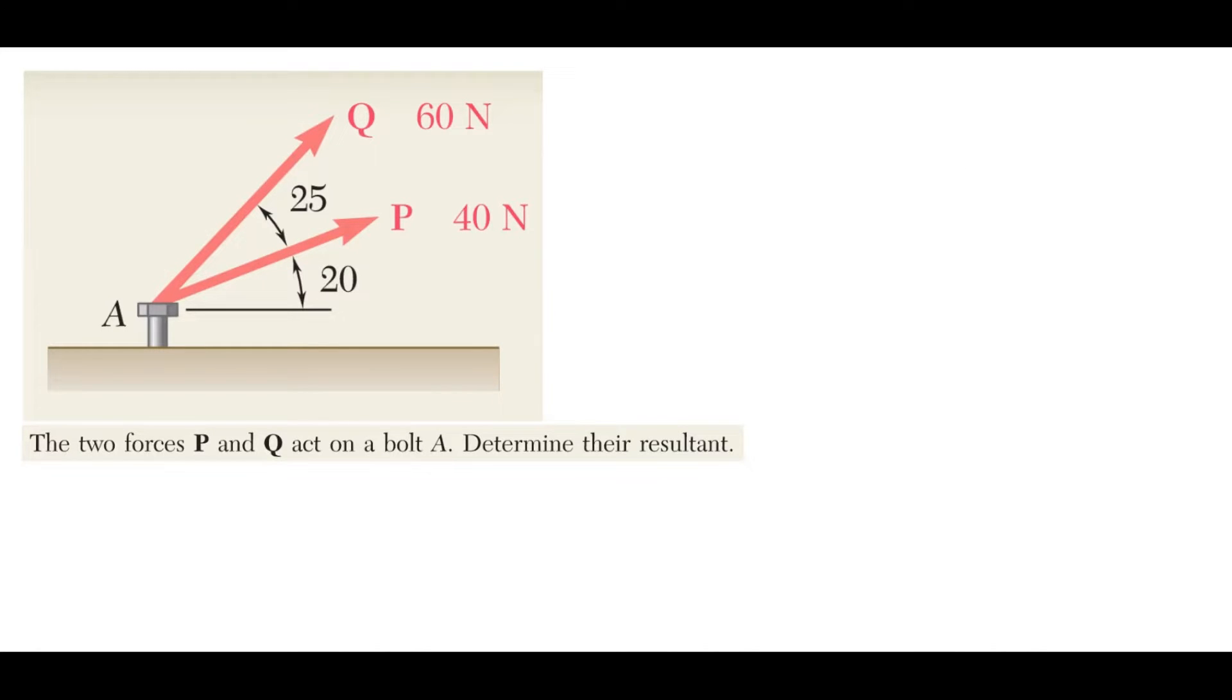Hello, everybody, and welcome back. So today we will be solving this problem shown on the screen here. It says two forces P and Q act on bolt A. Determine their resultant. There are multiple ways you can determine a resultant for two components, and the method that I'm going to be showing in this video will be using what's called the parallelogram rule.